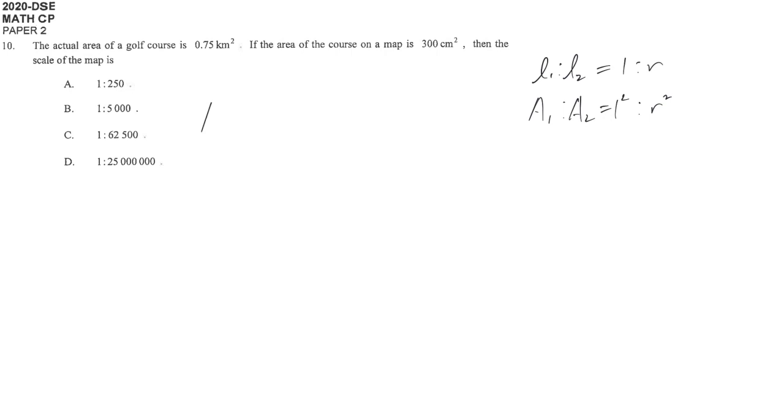I get used to writing down the smaller one first and then compare with the actual one. So I define the map area as A1 and the actual area as A2. And because they have different units, don't forget to write down your units into your ratio.